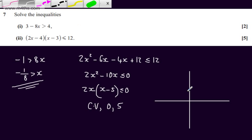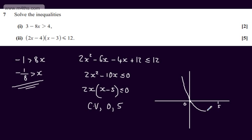What we're going to have is the critical value just here at 0, and we're going to have one just here at 5. So drawing the parabola, we're interested in where it's going to be equal to or less than 0. Let's just put these points here.